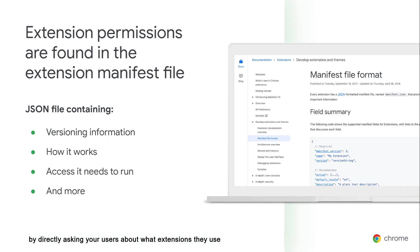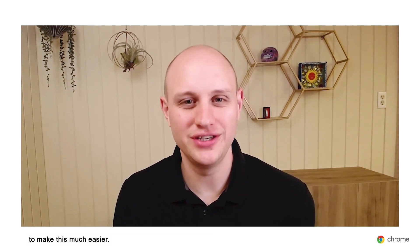You could also try to get this information by directly asking your users about what extensions they use on a regular basis, but that can be disruptive to end users and time consuming, especially if you're managing hundreds or even thousands of users. The good news is that Google has instituted methods to make this much easier. You can use the admin console to discover more information about the extensions already installed in your environment, and once you have a better understanding, you can apply policies to manage them. Even if your company already has an extension management practice in place, you can still benefit from the reporting features within Chrome browser cloud management.